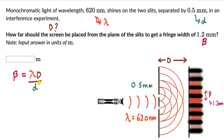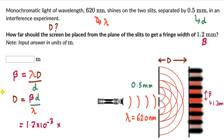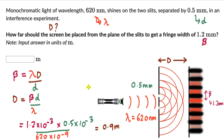Rearranging for capital D: D = beta × d / λ. Substituting values: D = (1.2 × 10⁻³) × (0.5 × 10⁻³) / (620 × 10⁻⁹) = 0.9 meters. So the screen should be placed 0.9 meters from the plane of the slits. You can try more questions from this exercise in this lesson, and if you're watching on YouTube, check out the exercise link in the description.